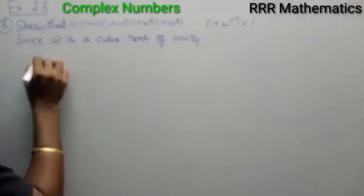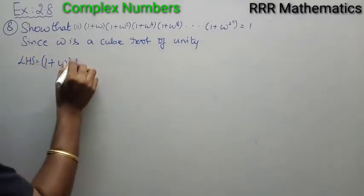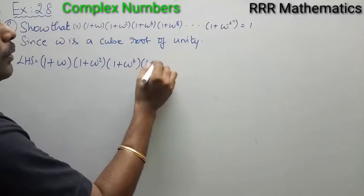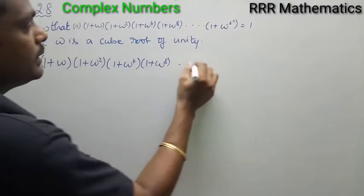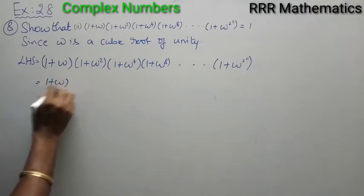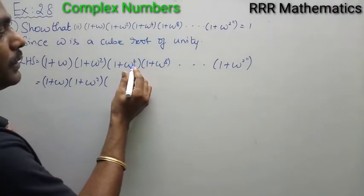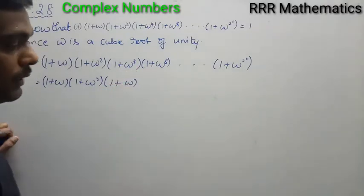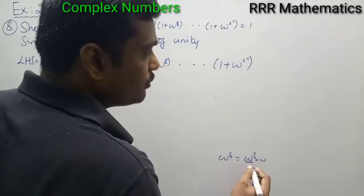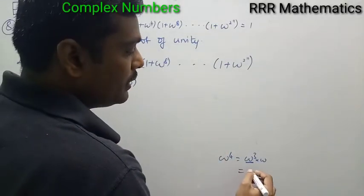Looking at the left-hand side: (1 + ω)(1 + ω²)(1 + ω⁴)... What is ω⁴? We can write ω⁴ = ω³ · ω. Since ω is a cube root of unity, ω³ = 1, so ω⁴ = ω. Therefore the third factor becomes (1 + ω).